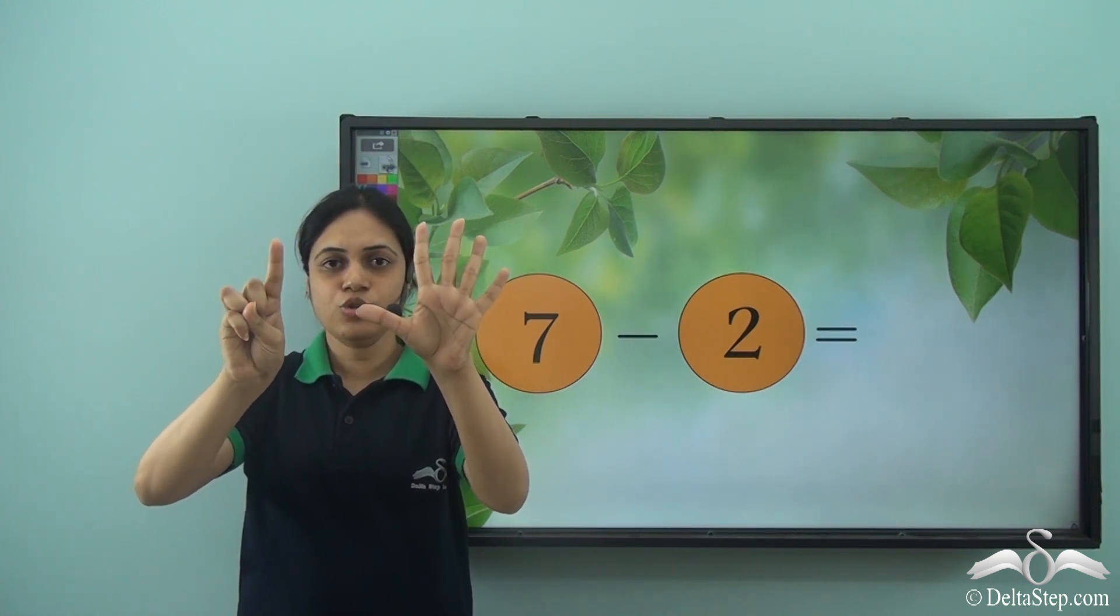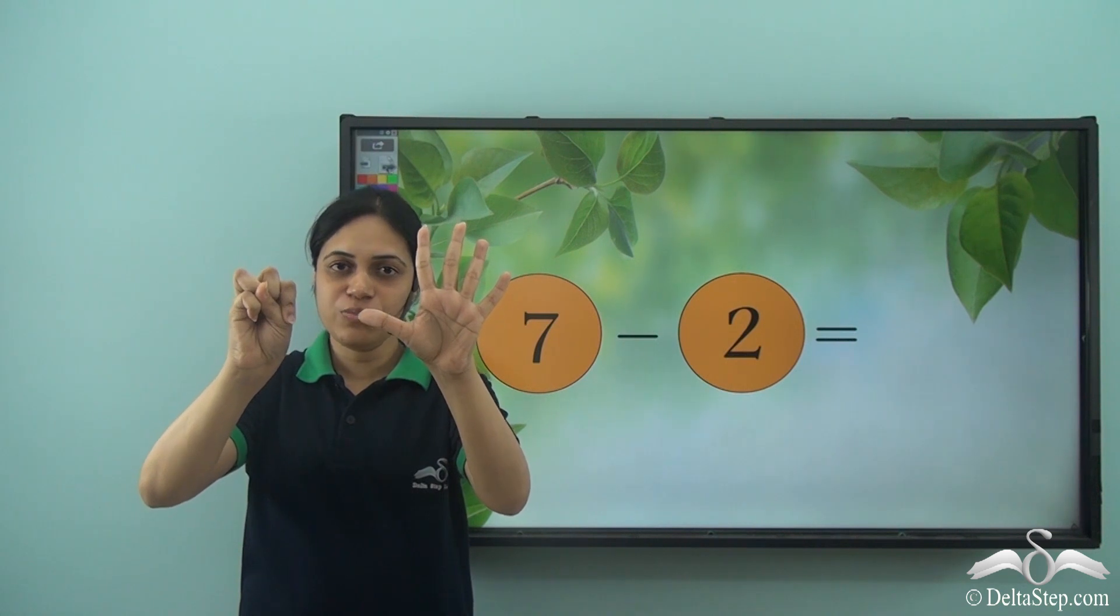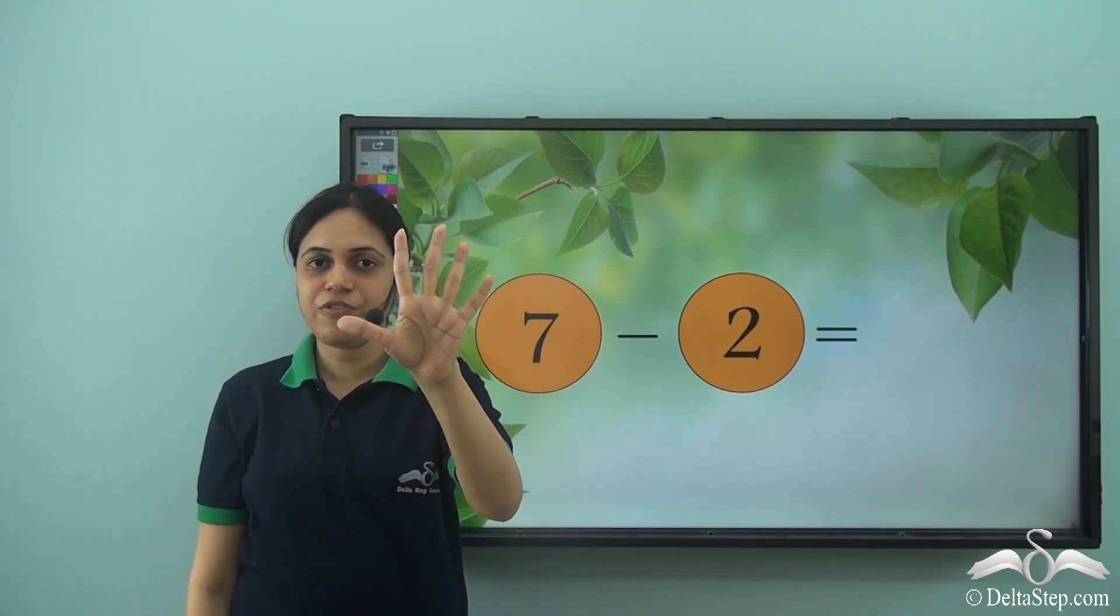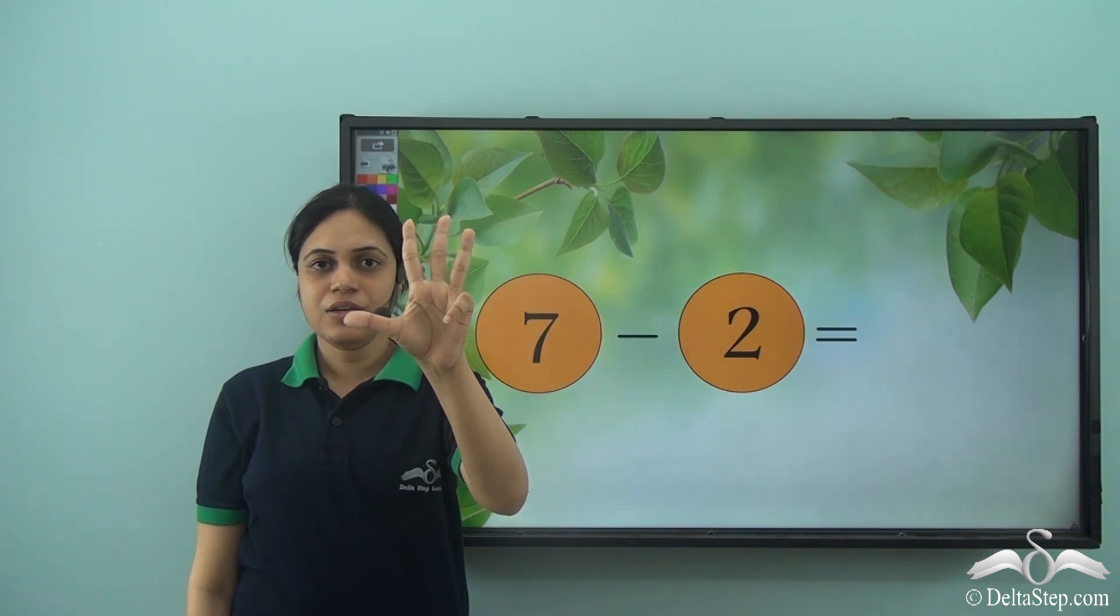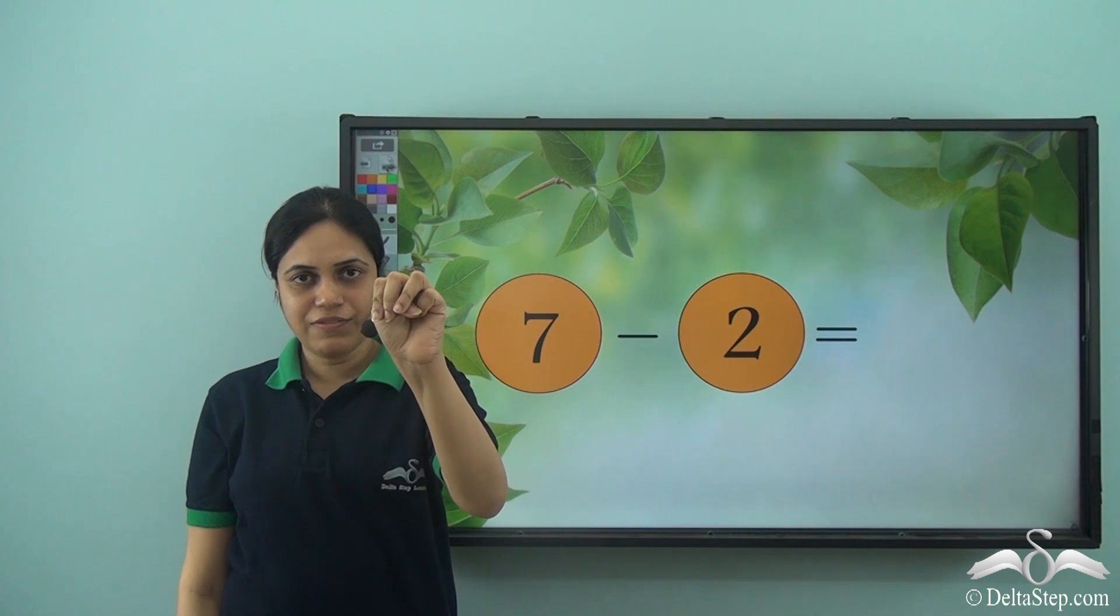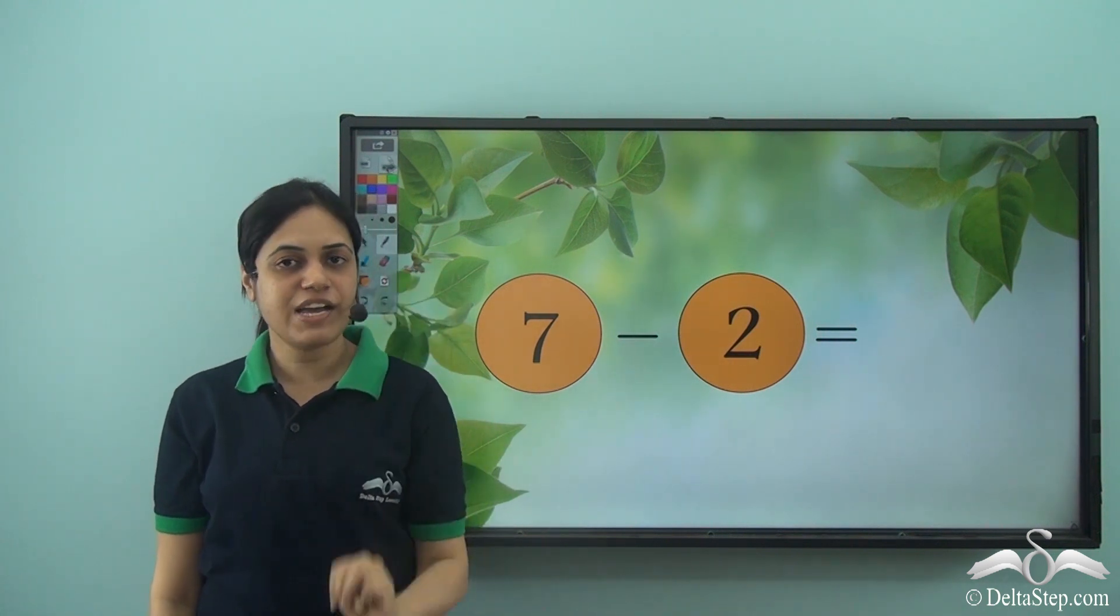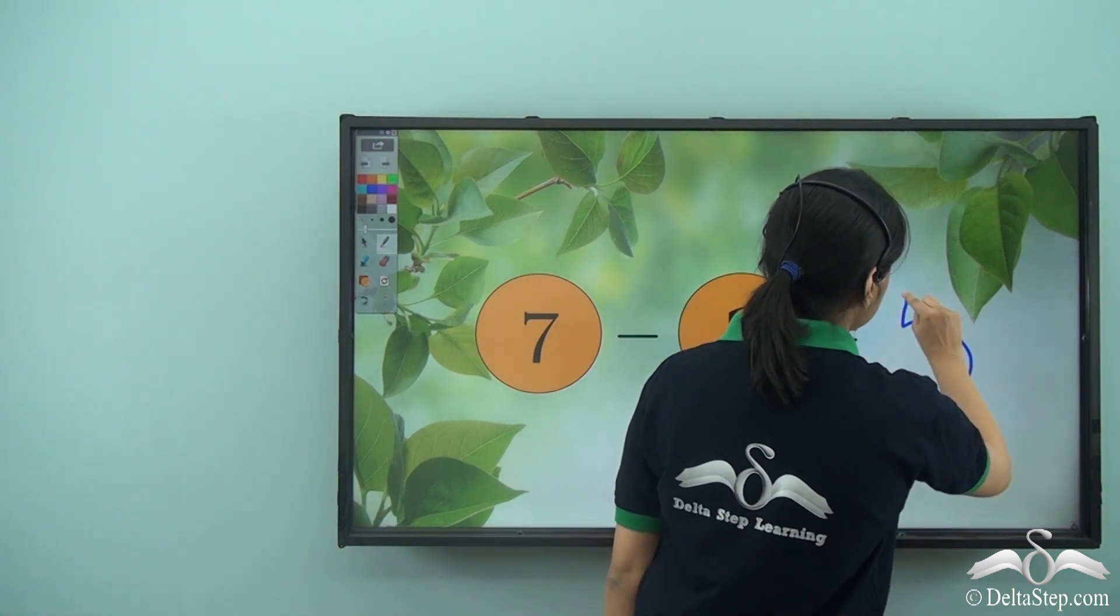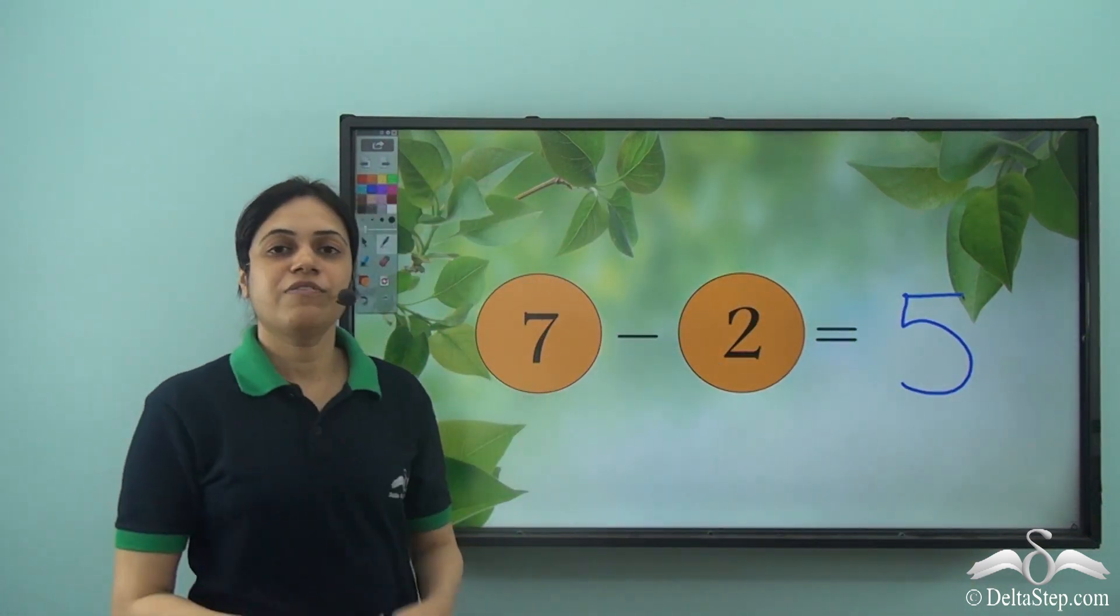And I need to close or remove two fingers. So one, two. I have removed two fingers. And how many fingers am I left with? One, two, three, four, five. So I am left with five fingers. So seven minus two is five.